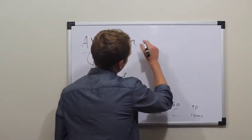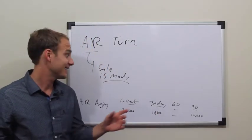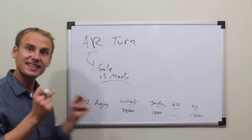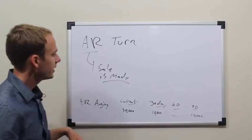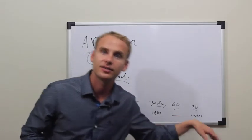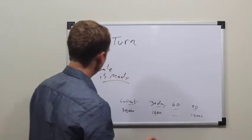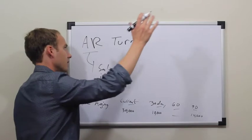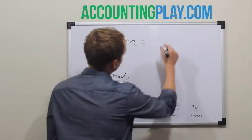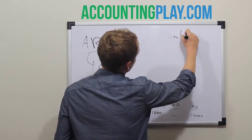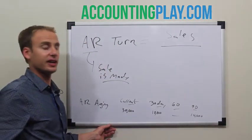So AR turnover — we're trying to conceptualize: is the collection fast? Is it instantaneous? Which is good, because we're getting our actual cash as fast as possible. Or is it slow and dragging out? And so we have a way to do this in accounting: AR Turn equals Sales over Average Accounts Receivable.